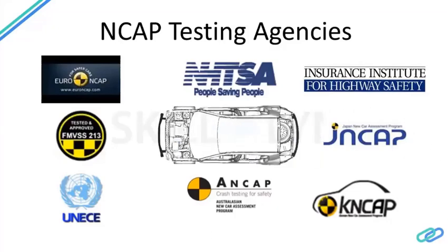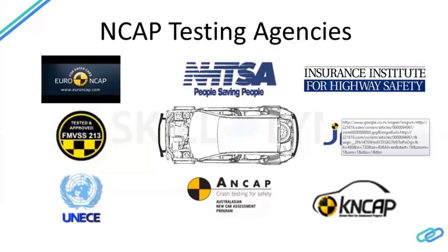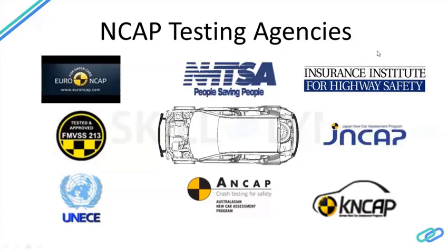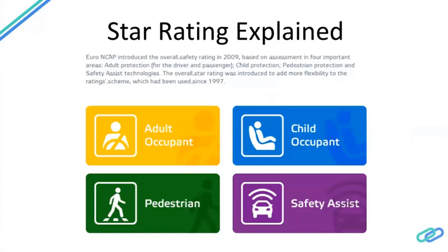Testing agencies around the world include: Euro NCAP for the European Union; NHTSA (National Highway Traffic Safety Administration) for the USA; IIHS (Insurance Institute for Highway Safety); FMVSS (Federal Motor Vehicle Safety Standards) as the American regulatory requirement; JNCAP for Japan; UNECE (United Nations Economic Commission for Europe); ANCAP for Australia; KNCAP for Korea; and in India, a crash testing agency based in Chennai that is now operational and developing high-end crash safety systems.